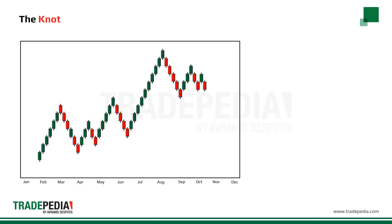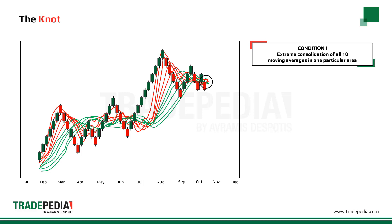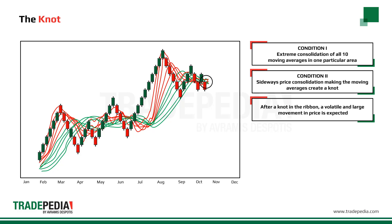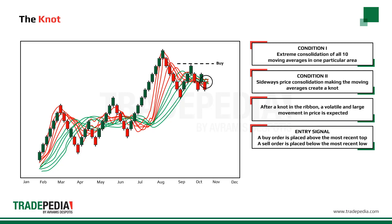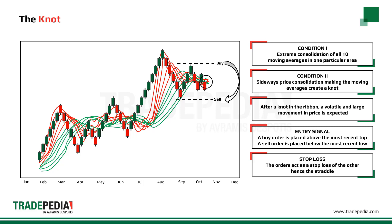A knot entry signal is given when the following conditions are met. Condition one: the extreme consolidation of all 10 moving averages in one particular area. Condition two: a sideways consolidation. After a knot in the ribbon, a volatile breakout is expected. However, the direction is not known, so traders straddle the market by placing orders on both sides. A buy order is placed above the consolidation area with a relative stop-loss order below it, and a sell order is placed below the consolidation area with a relative stop-loss order above it. Some traders use the short-term moving average to try and speculate on the most probable breakout direction.